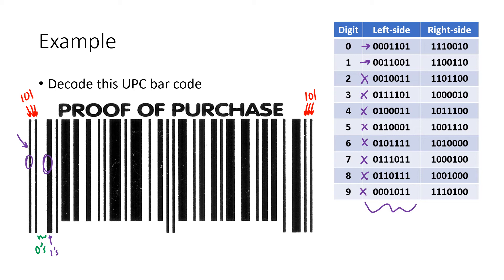After the ones, what we have is a single white space, and we can tell it's a single space because we compare it to the single space in our guard pattern and it's the same width. So now we know our pattern is multiple zeros followed by multiple ones followed by a single zero — and that narrows it down to just one possibility. This has to be the digit zero: three zeros, two ones, and then one zero and one. So our first digit is zero.